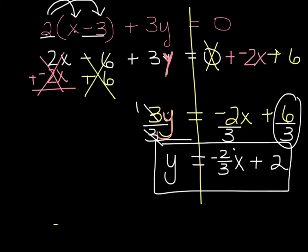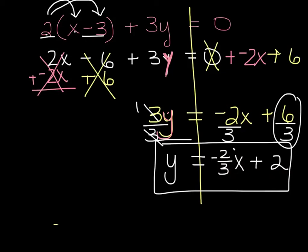Let's just point a couple things out. The slope — remember, rise over run — that's right here: negative 2 thirds. And then the y-intercept is 2. So again, here's the slope, here's the y-intercept.